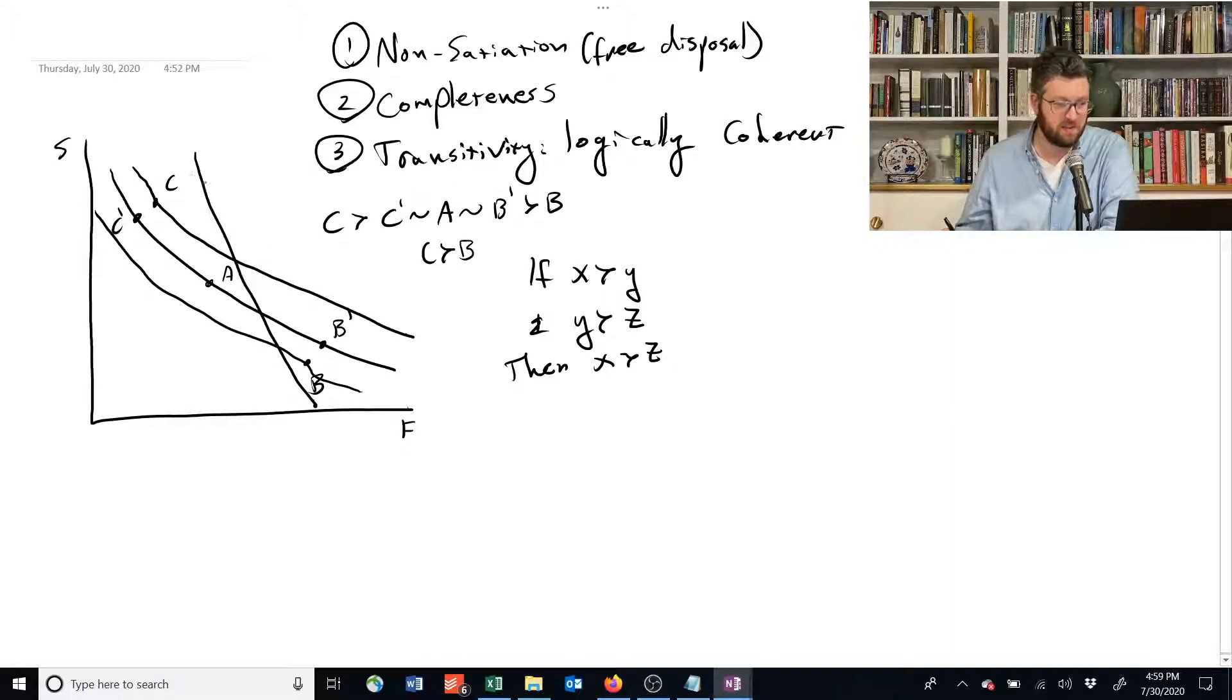And the reason is that if I've got this new indifference curve with x and x prime, since x has more than c, we would be saying that x is preferred to c by the non-satiation principle.